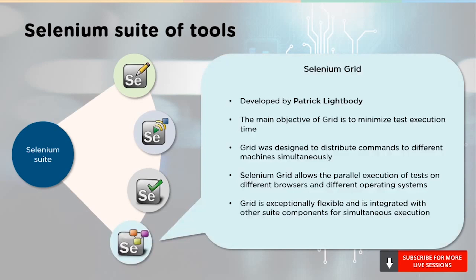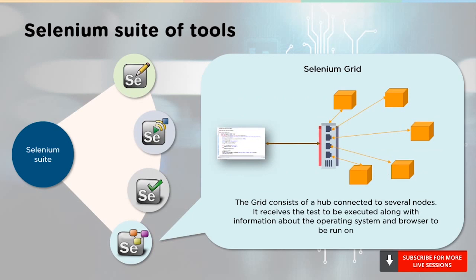The final tool is the Selenium Grid. It was developed by Patrick Lightbody. The main objective of Grid was to minimize the test execution speed. Grid was designed to distribute commands to different machines simultaneously. It is exceptionally flexible and can be integrated with other tools. The typical setup of a grid consists of a central hub connected to several machines. The hub receives the test to be executed along with the information about the OS and browser. The hub accordingly picks one of the machines that conforms to the requirements and delegates the tasks.